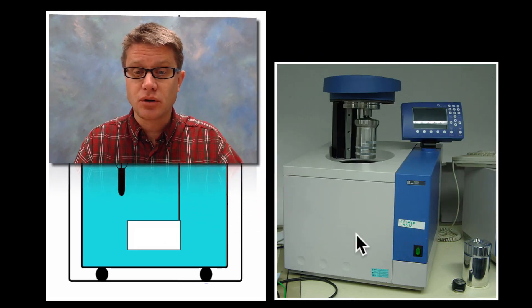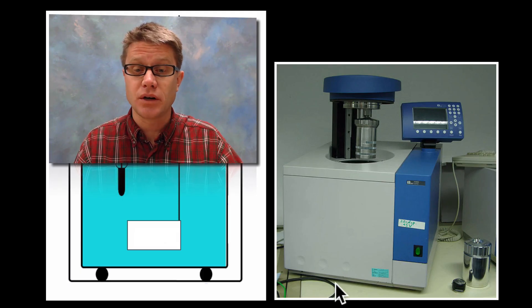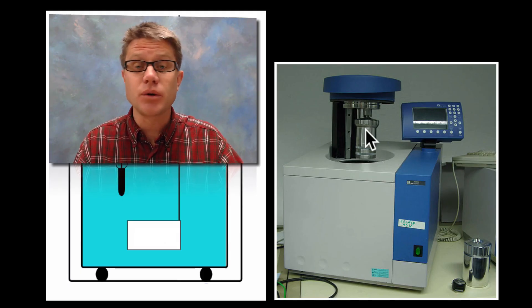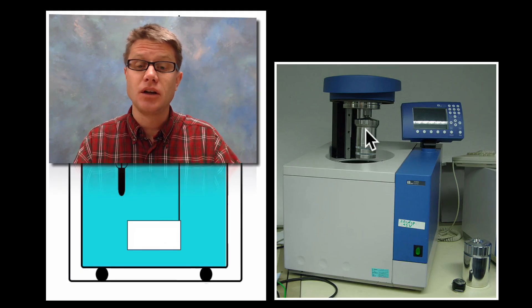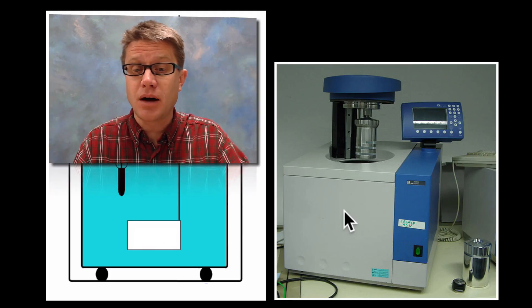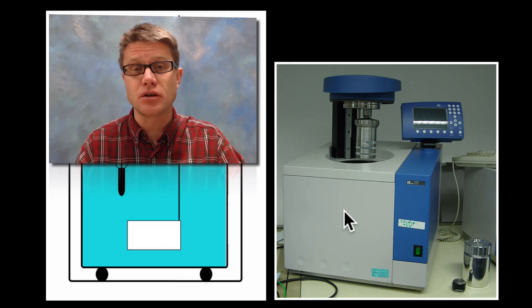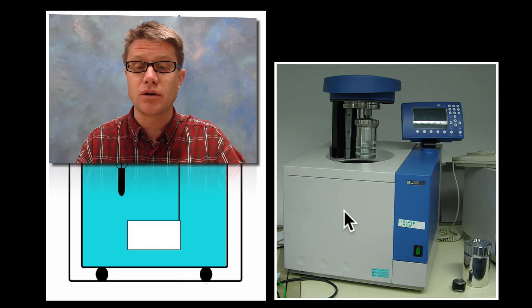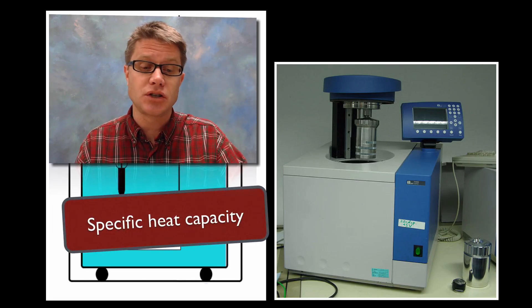And so this is what an actual, this would be a bomb calorimeter. And what it's doing is we're putting whatever we want to study inside this vessel. We're enclosing it inside water. We have a really detailed thermometer on the inside. Lots of times they'll have a stirrer so that we're moving that water around. And we can measure energy changes.